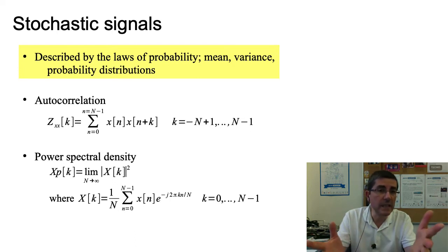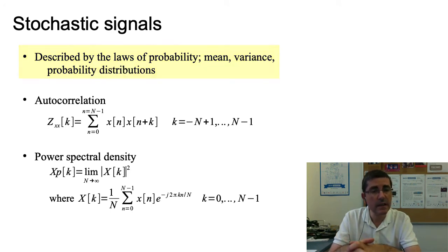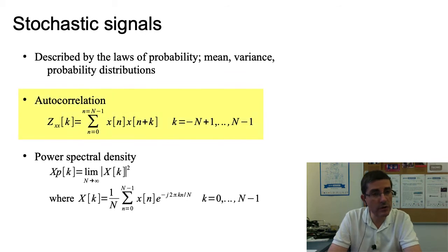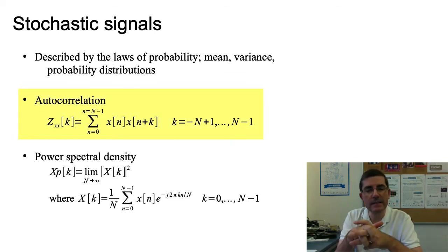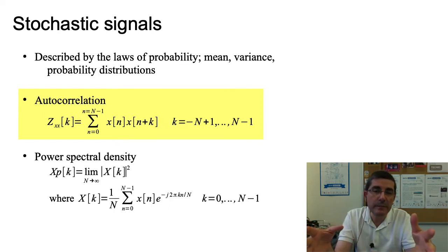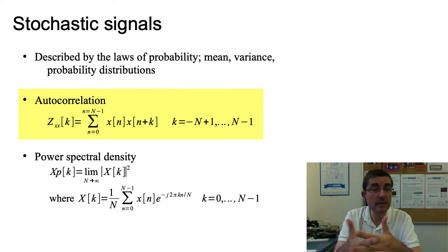We talk about the mean, the variance, and the probability distribution of particular signals. There are some mathematical functions used to analyze these types of signals and capture some of their characteristics. For example, one is the autocorrelation function, which we have already seen before. The autocorrelation function allows us to measure the periodicity of a signal, or the degree of repeating patterns. We use it for detecting the fundamental frequency.